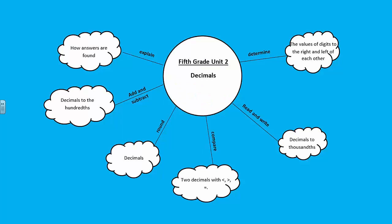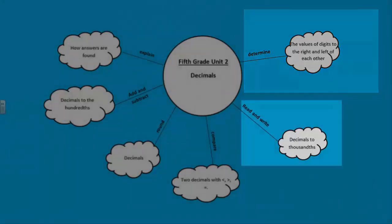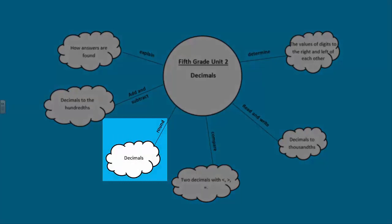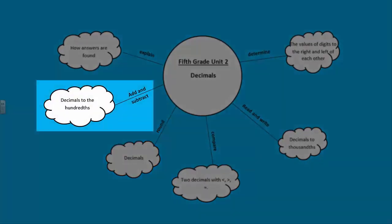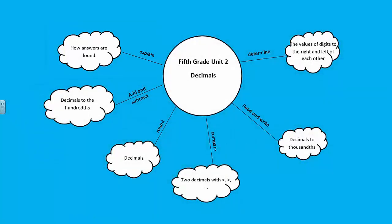In Unit 2, students further their understanding of the place value system by recognizing that in a multi-digit number, a digit in one place represents 10 times as much as it represents the place to its right, and one-tenth of what it represents in the place to its left. Students also read, write, and compare decimals to the thousandths place, and use their understanding of place value to round decimals up to the hundredths place. In the final part of the unit, students add and subtract decimals to the hundredths place using concrete models or drawings and strategies based on place value and the properties of operations. Students relate their strategy to a written method and explain their reasoning. At the 5th grade level, concepts are emphasized from a hands-on approach in order to develop understanding rather than relying on memorization of rules and procedures.